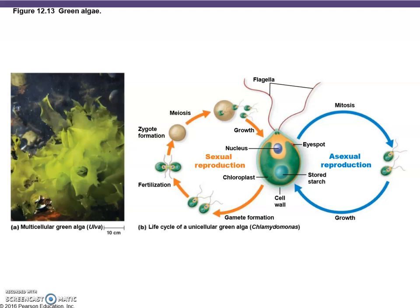Sexual reproduction always involves the production of gametes. The gametes fuse in a fertilization event producing a zygote, and then by meiosis more gametes are produced that can grow into adult cells. These organisms can also switch between sexual and asexual reproduction.